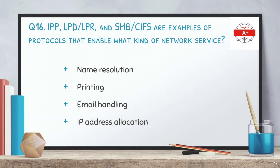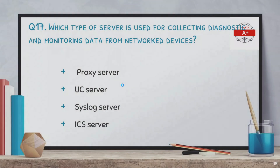Question 16: IPP, LDP/LPR, and SMB/CIFS are examples of protocols that enable what kind of network service? The options are: name resolution, printing, email handling, and IP address allocation. The correct answer is printing.